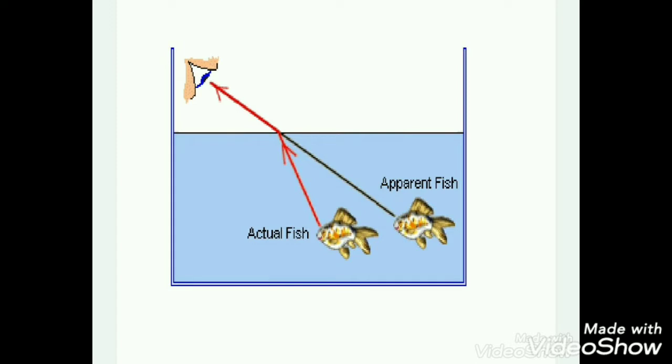Let's look at the fish in the pond. Observe the fish from the side of the pond. The fish in the pond appears closer to the surface and bigger in size. It is because light rays from the fish are refracted when they travel from water to air.